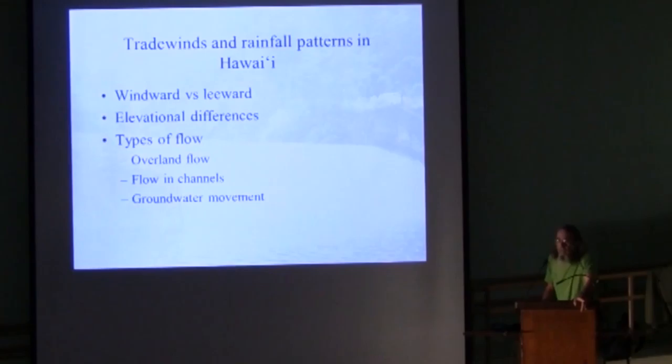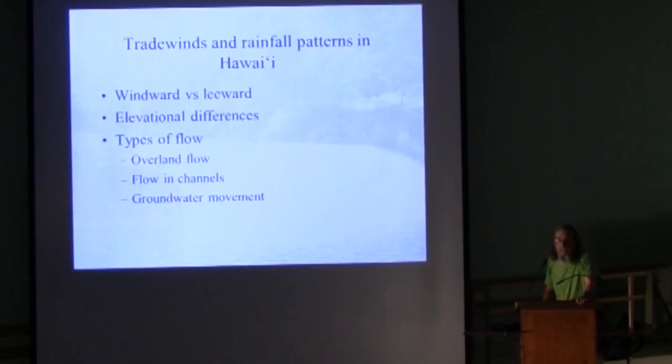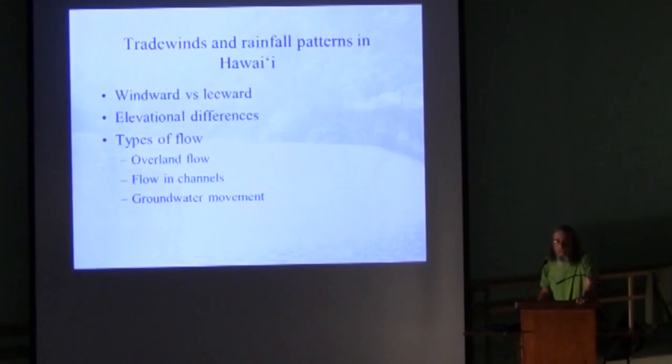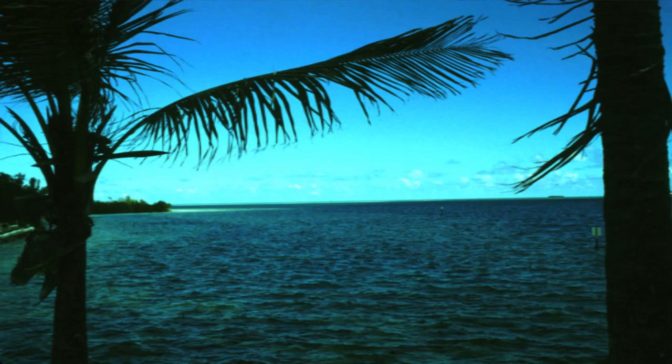Depending on the elevation of the point and depending on where it is on the island, the rainfall will be different on average. We're going to talk about flow — that is, once the rain hits the ground or hits the leaves or whatever, it eventually percolates down to the surface. Where does it go from there? What are the kinds of things that influence that? Overland flow, flowing channels, and groundwater, which I'll hardly talk about — it's very important but there's too much for today.